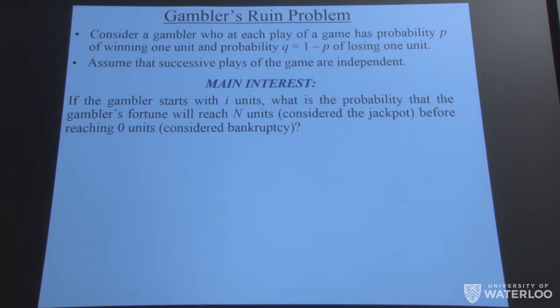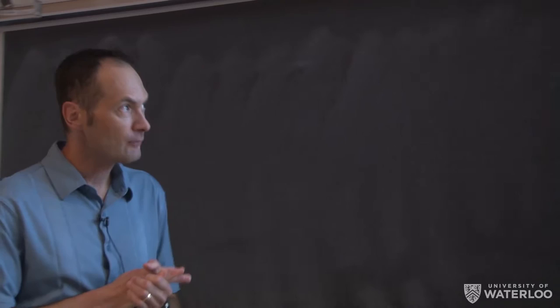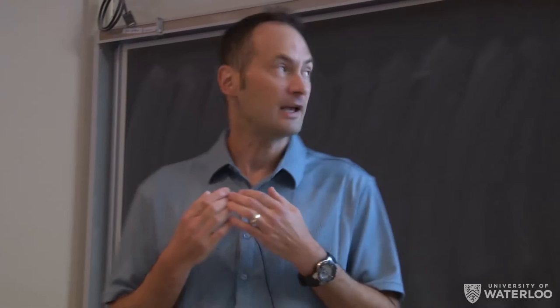So the main interest in this particular problem is if I'm a gambler and I start off with, say, i dollars or i units, so think of i as some sort of positive integer, then I'd like to know the probability that I'm going to end up getting the whole jackpot, the whole amount of winnings, which we'll denote by capital N, also being a positive integer. And we keep playing this game until I either end up getting everything or end up losing everything, which means I'm bankrupt. So one of two things can happen. I either end up with zero or I end up with the entire jackpot, which is capital N. And starting with i units, I'd like to be able to determine, ideally, an explicit formula for this probability.